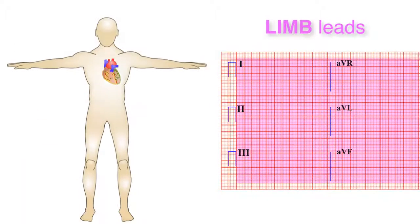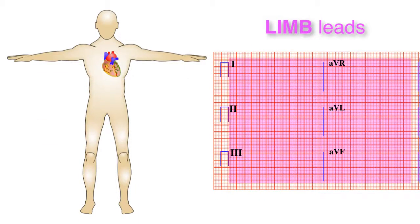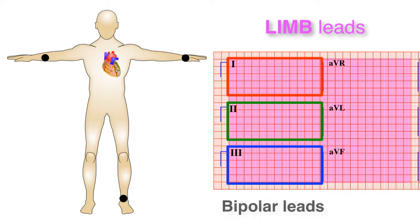The limb lead recordings, situated in the first half of the EKG, are composed of vectors created by electrodes placed on the right arm, left arm, and the left leg. Leads 1, 2, and 3 are considered bipolar leads as they comprise the recording between two electrodes.